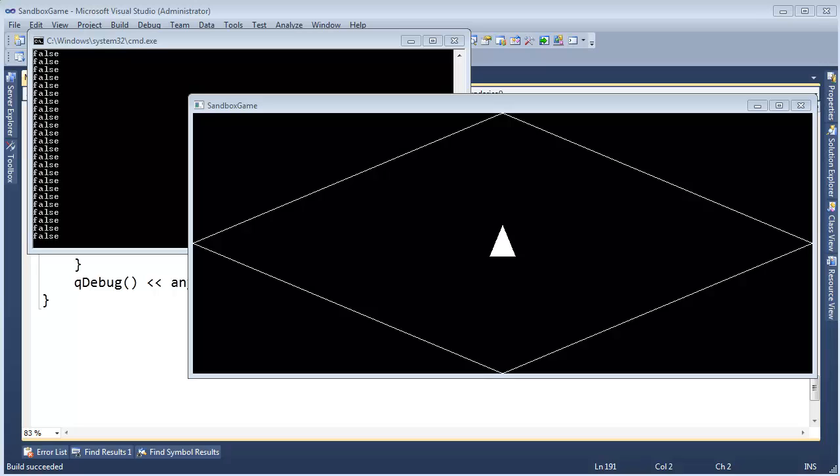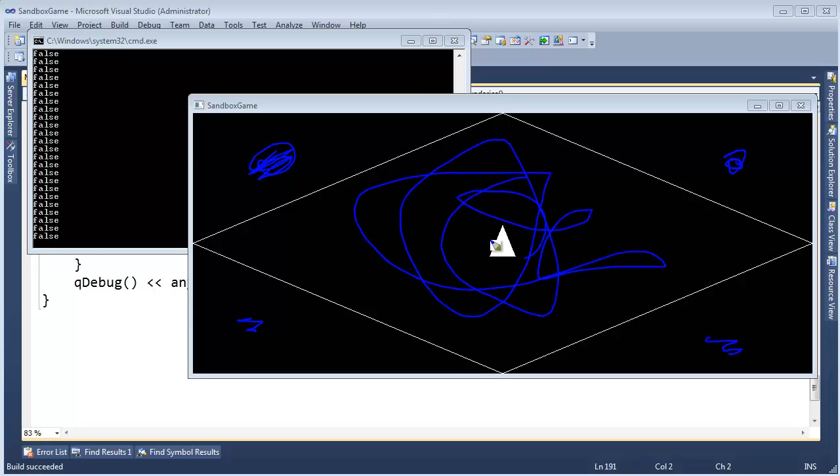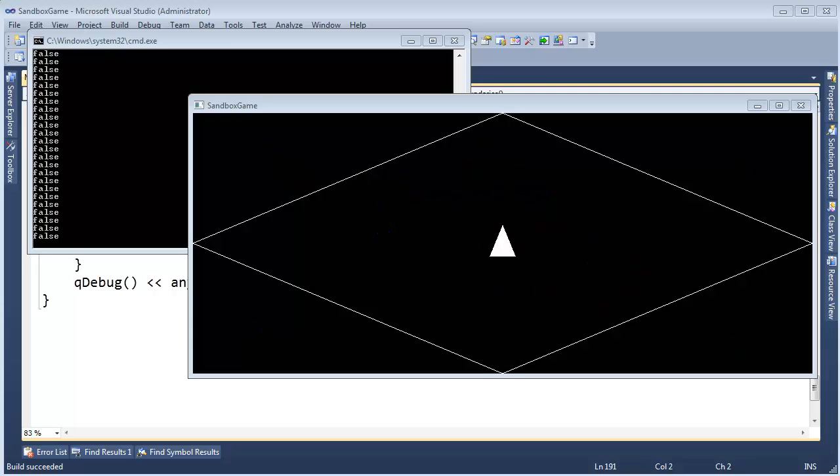In the previous videos we used dot products to figure out if the ship was in the bad zone out here, out here, out here, or out here. But we didn't do anything to correct it. We need to get the ship to bounce back into our good zone. This is the good zone in here. There's a few vector pieces of math we need to know before we do that.